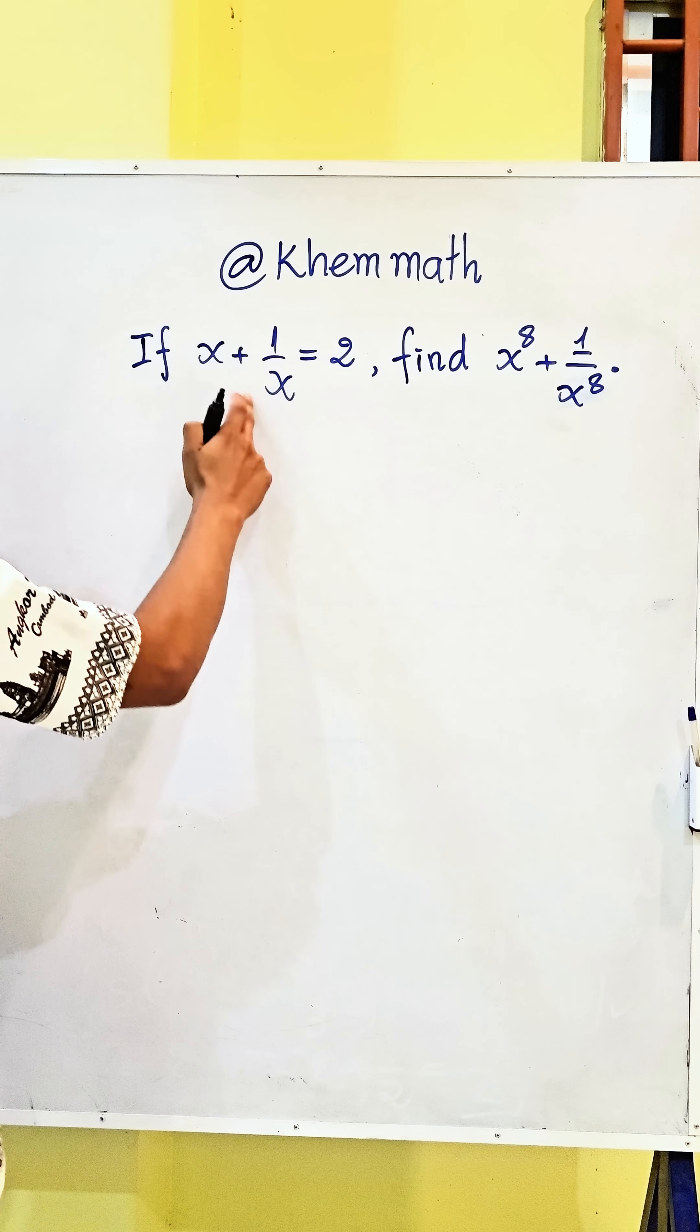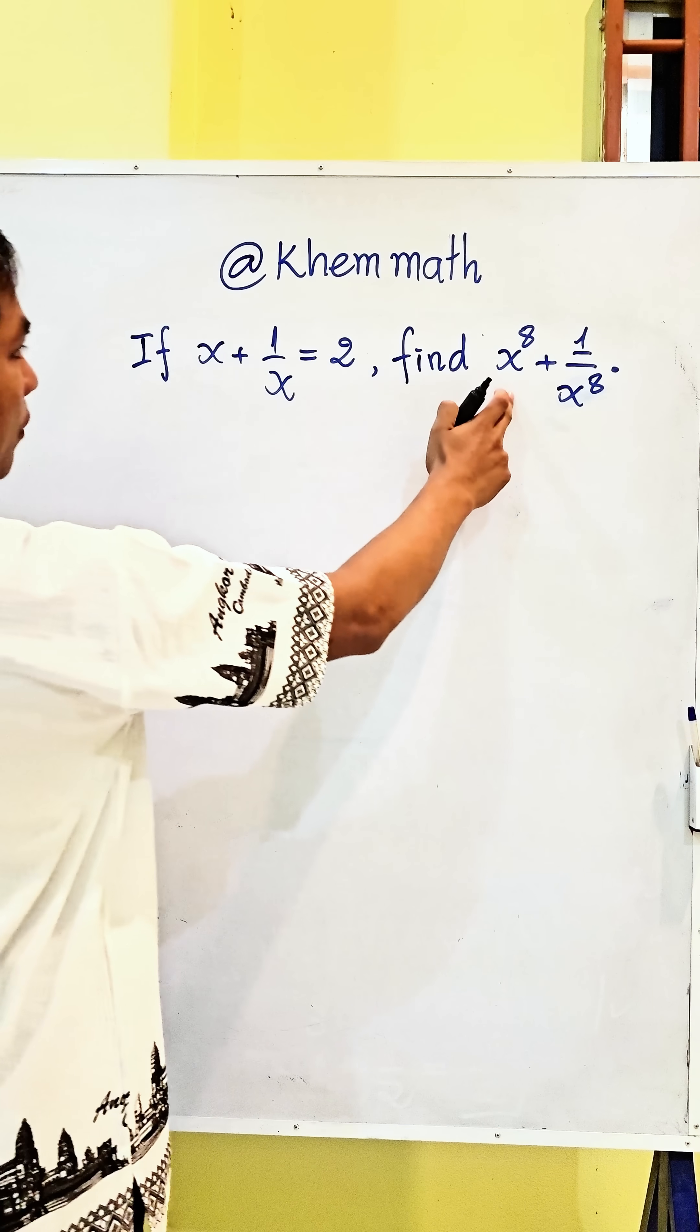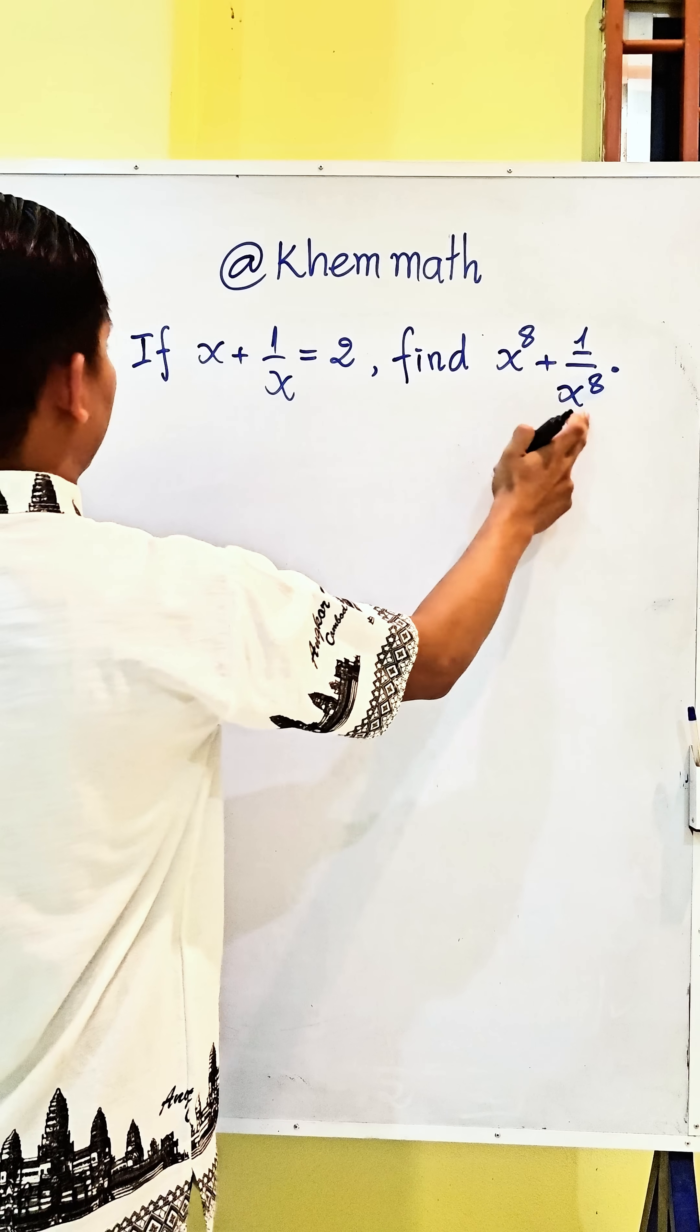If x plus 1 divided by x equals 2, find the value of x power 8 plus 1 divided by x power 8.